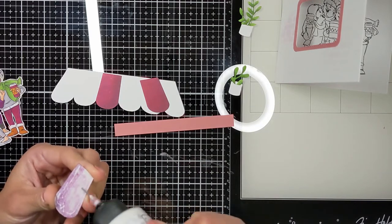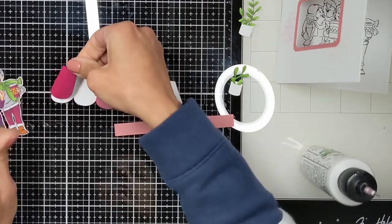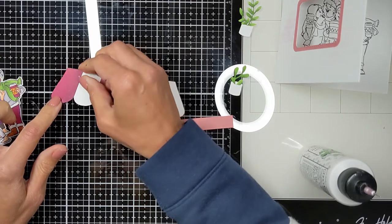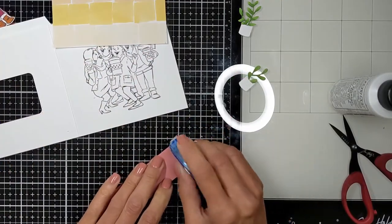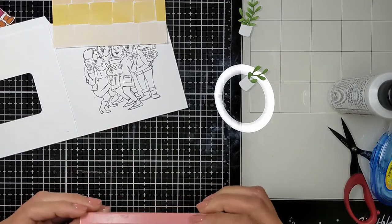Here I also used my Cricut machine to cut this umbrella for the outside of the cafe. I colored parts of the umbrella using the same Copic markers I used for one of the pants of the girls so they would match together from the outside.